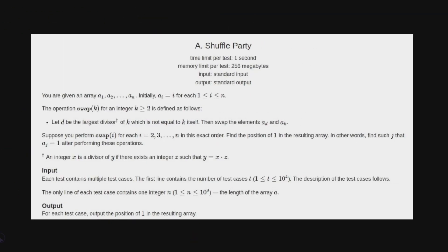Let's get started. Let's read the formal problem statement once. You are given an array a, a1, a2 up till an. Initially ai is equal to i for each i in range 1 to n.